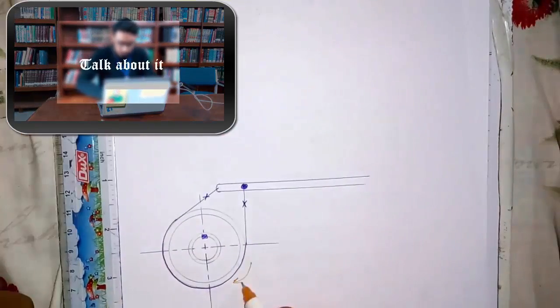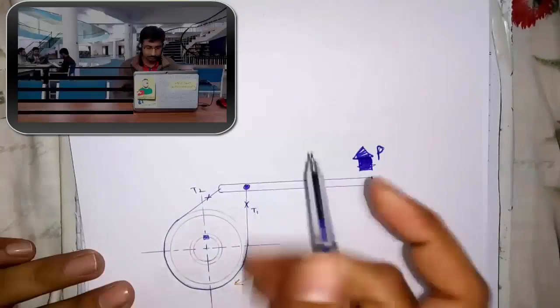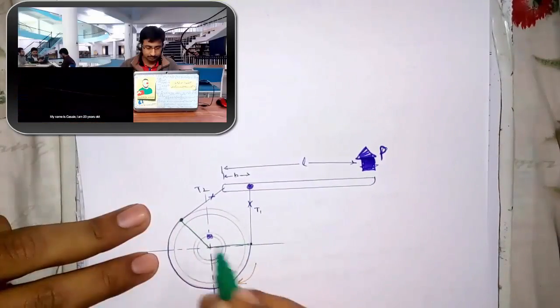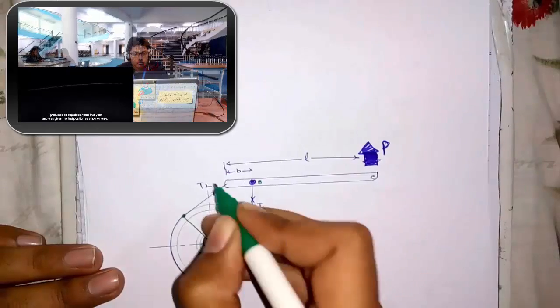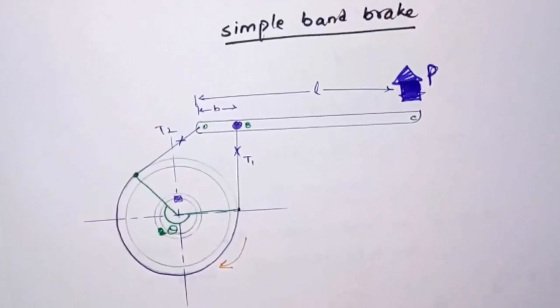It is a type of brake called simple band brake. This is the diagram of the simple band brake.